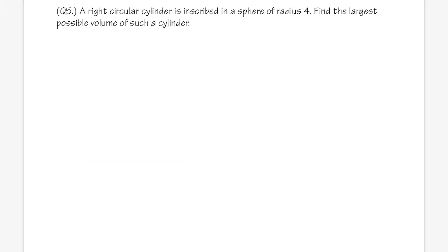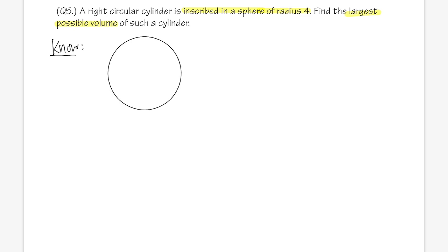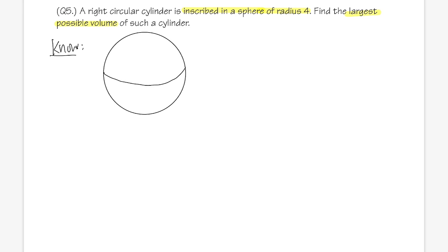Number five: a right circular cylinder is inscribed in a sphere of radius 4. Find the largest possible volume of the cylinder. The sphere is like a basketball, and we're constructing a cylinder inside it. Recall: the volume of a circular cylinder is V = πr²h. We want the maximum volume of the cylinder.